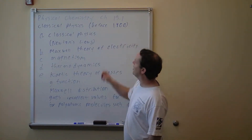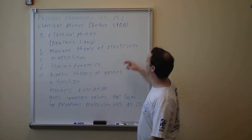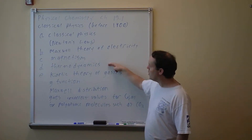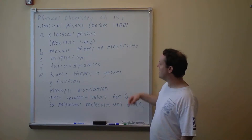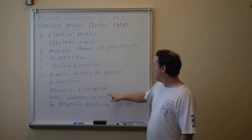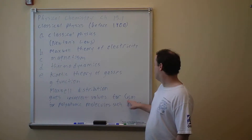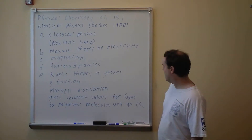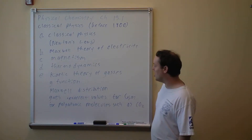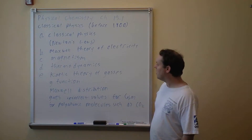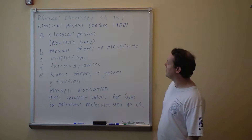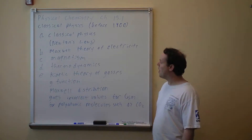There was classical physics — that's basically Newton's laws of motion — then we had the Maxwell theory for electricity, magnetism, thermodynamics, the kinetic theory of gases, like the g-function and the Maxwell distribution. It's also important to remember we found the heat capacity of certain molecules, like carbon dioxide — the molar heat capacity at constant volume — and this will give you the wrong value. Roughly 1900 is when people started to realize that some of this stuff is not quite right.